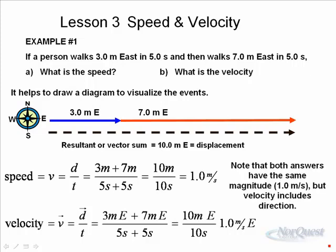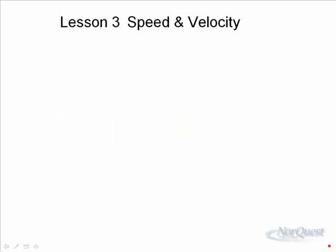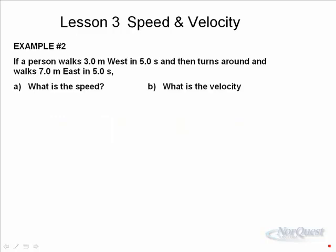Notice that they both have the same magnitude — one point zero meters per second — but velocity must also include the direction. This is very important in the next example, which is not quite as uniform as the first. In example number two, the same person, instead of walking three meters east to begin with, walks three meters west, then turns around and walks seven meters east in five seconds. What's the speed? What's the velocity?